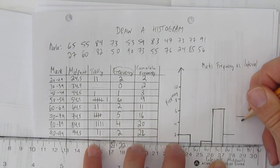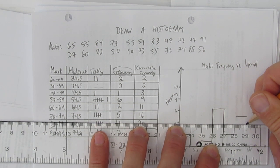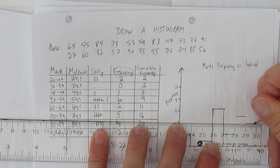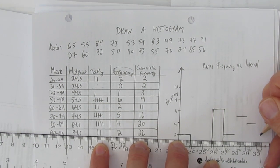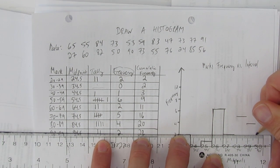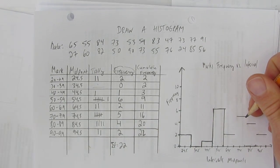And then 80 to 89 is 4. That's right about here. And then 90 to 99, or the midpoint, 94.5 has 2. That's again back down here. And 2. And now I can draw and connect all those bars together.